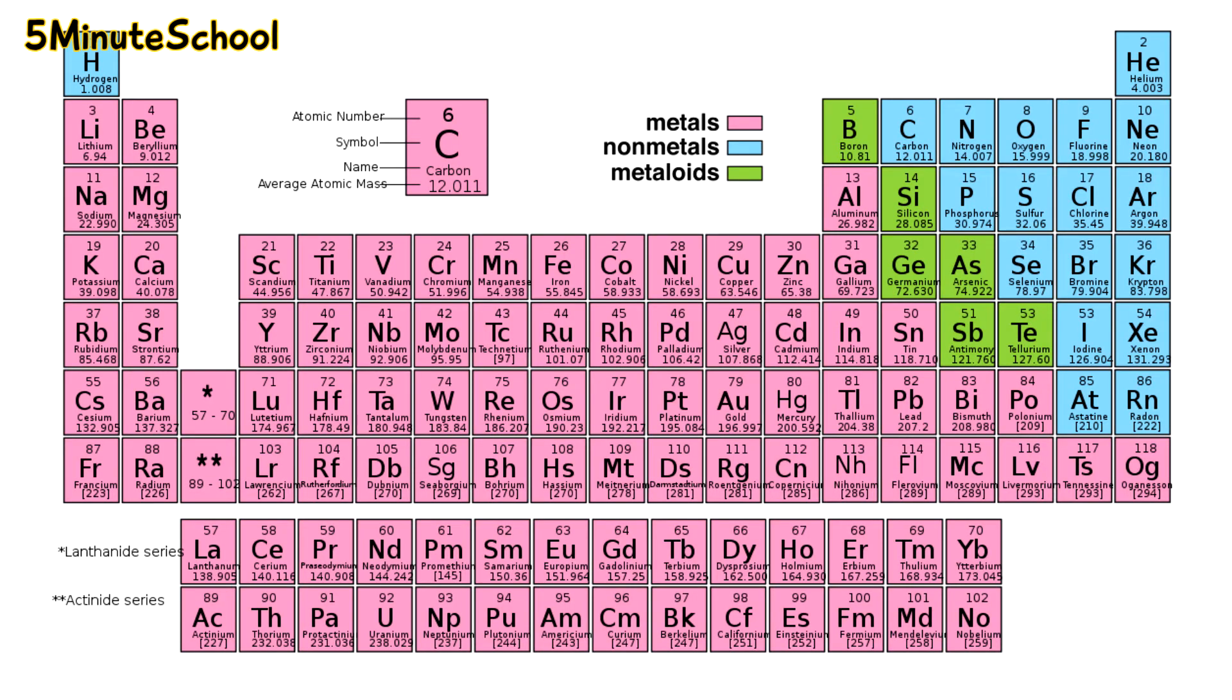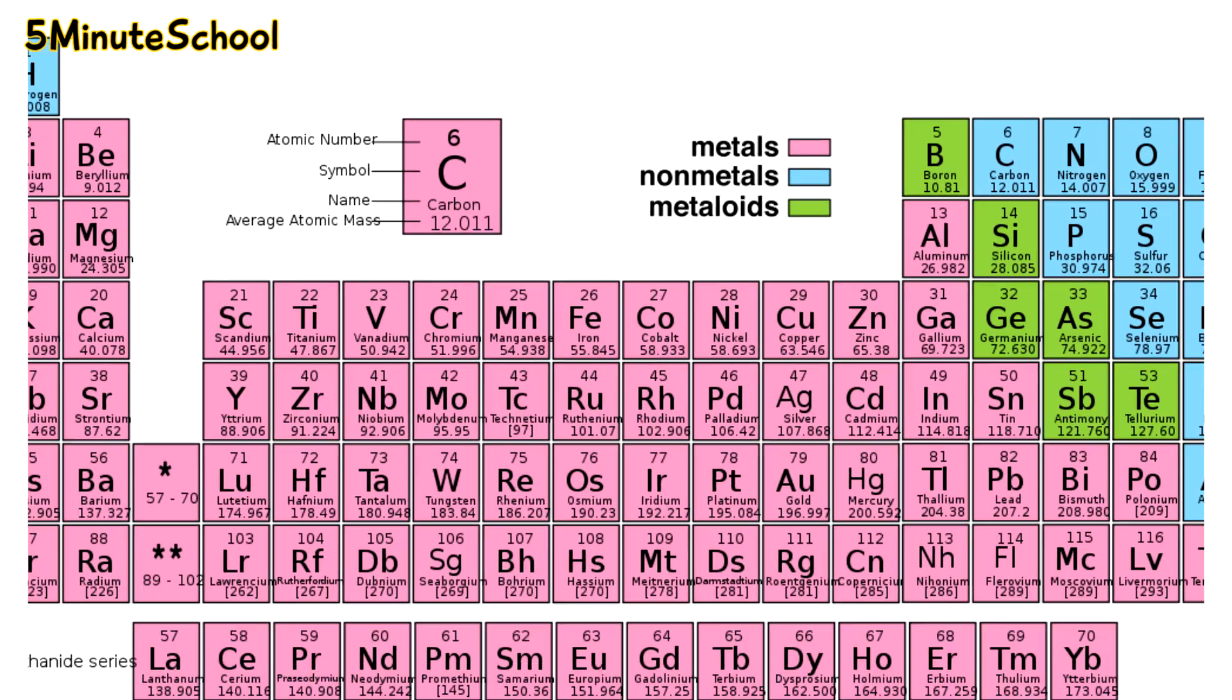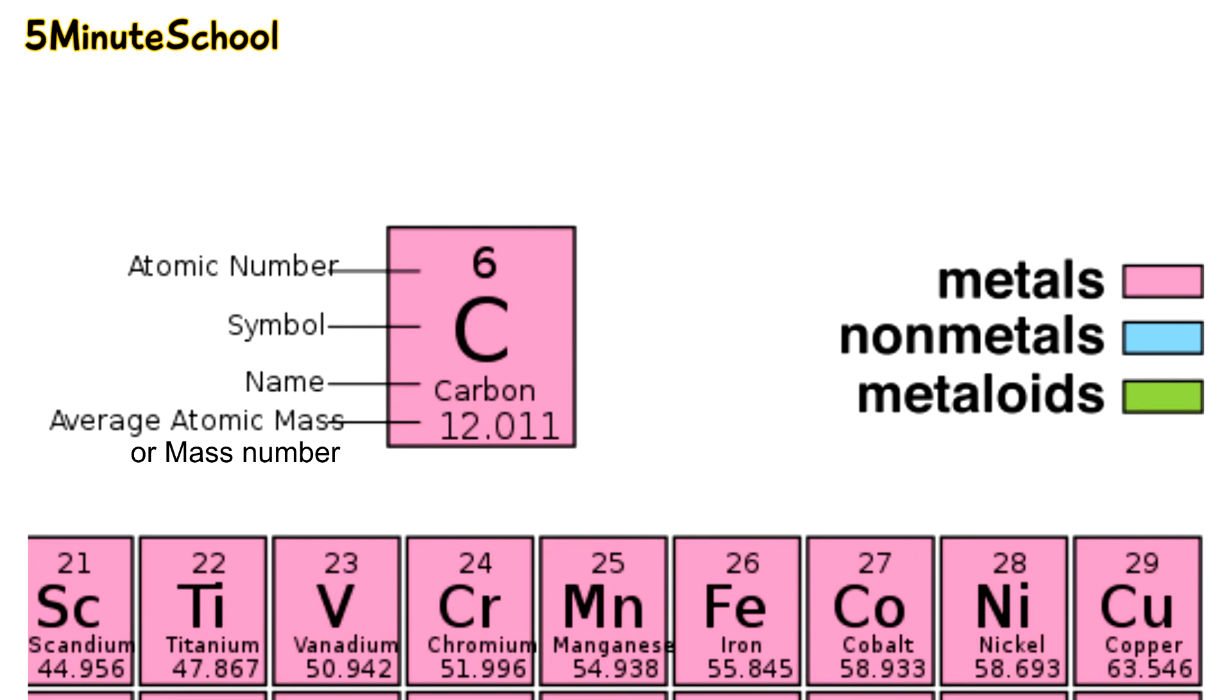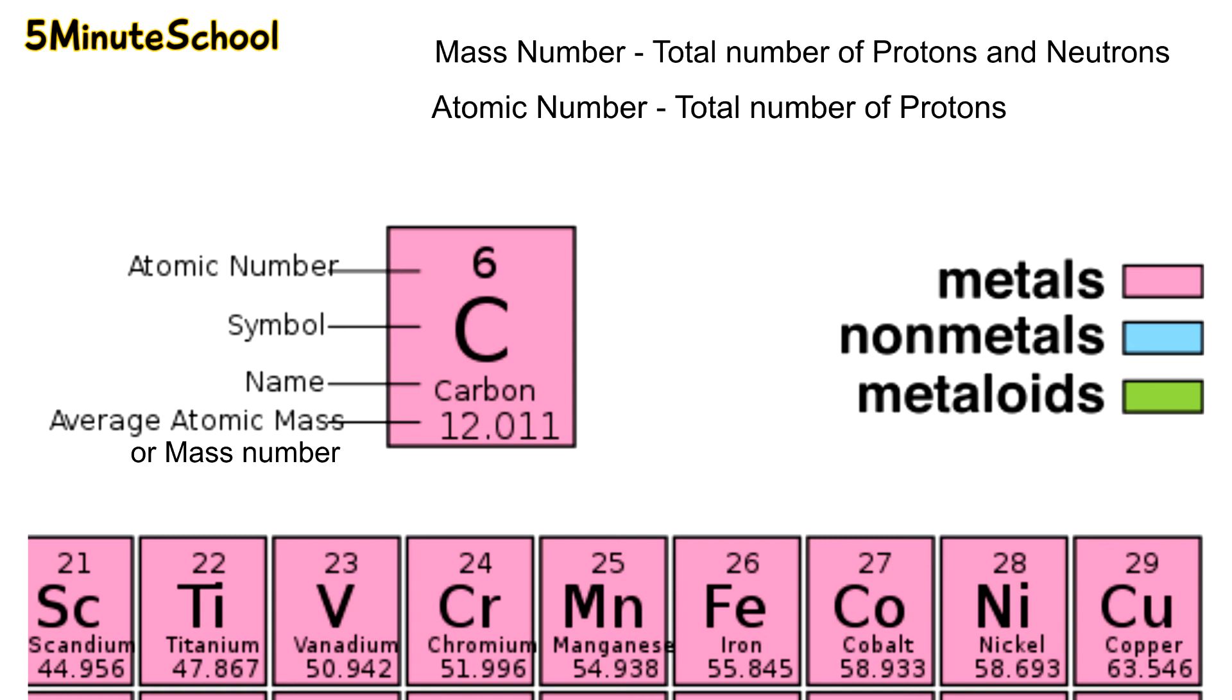When we look at the periodic table, which has a big list of elements, we often see two numbers next to the element symbol. The mass number tells you the total number of protons and neutrons in the atom. The smaller number is called the atomic number and tells you the number of protons present. If you're trying to work out the number of neutrons present in the atom, just subtract the atomic number from the mass number.